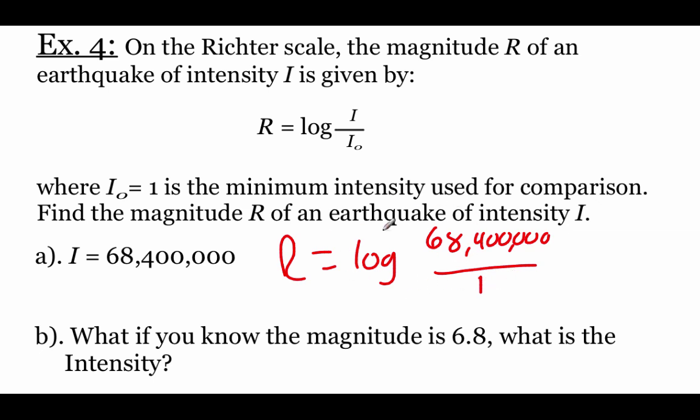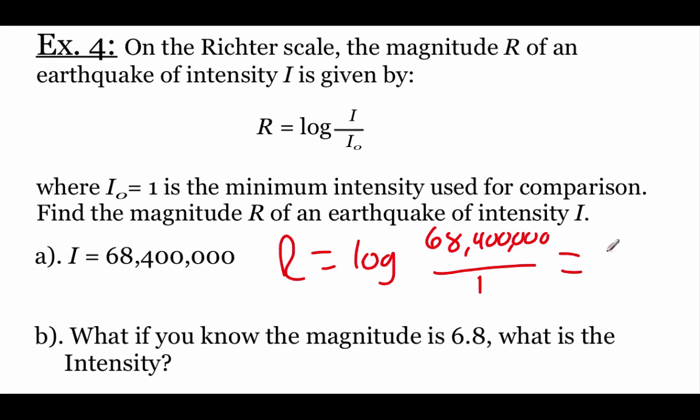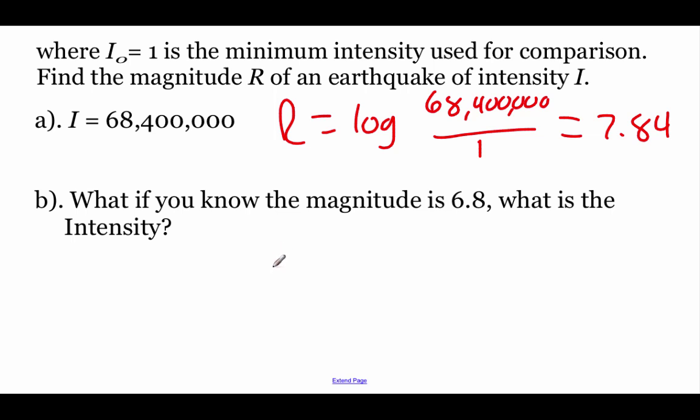If we type that into our calculator, we're going to get about 7.84 as our r value. Taking a look at the second part, this time we're told the magnitude is 6.8. We want to figure out the intensity. So I'm going to plug in this 6.8 for my r value equals the log of, we don't know what this i thing is, but we do know that our i sub 0 value on bottom is 1. Now we don't really need to divide by 1 here. So we could just write that as log of i.